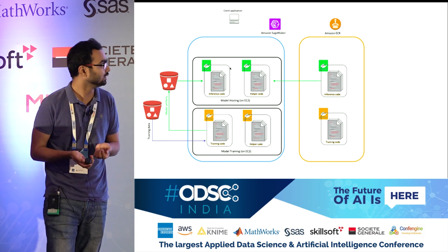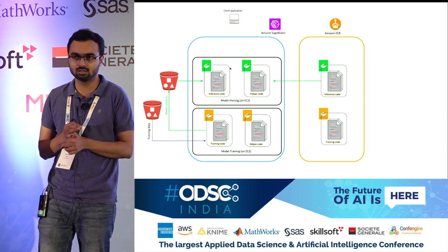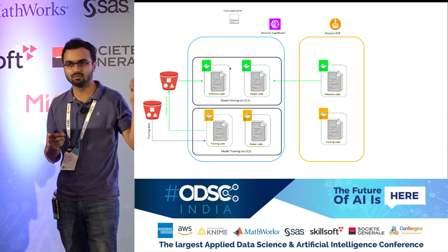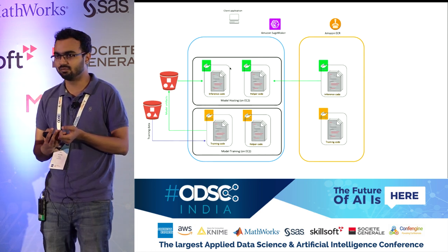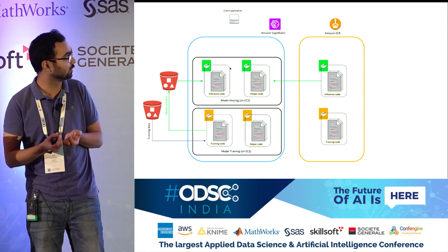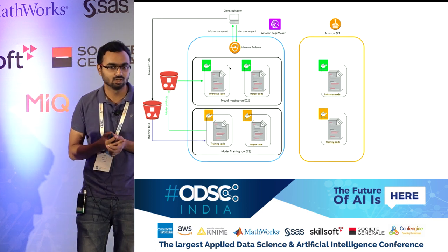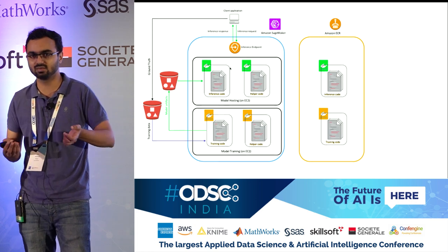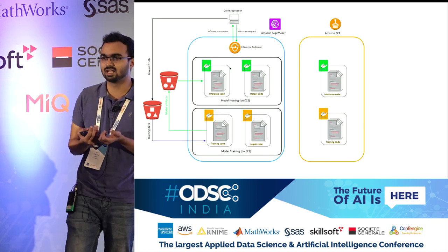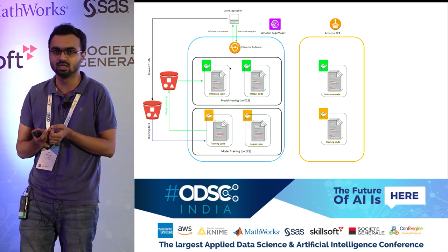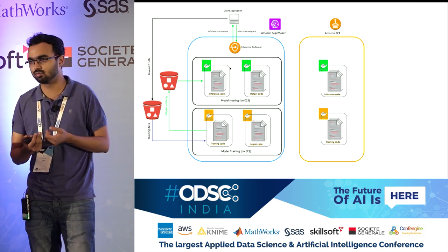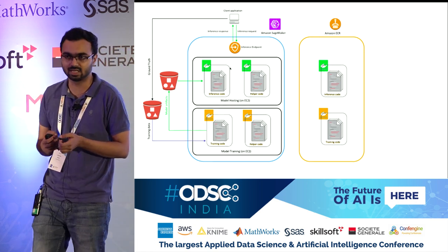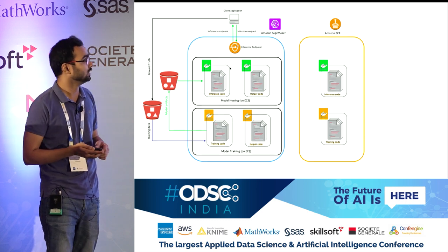The next step is inference. Within the SageMaker platform, you don't have to do this manually — we pull in the model artifacts from S3, wrap them with a serving API, and host it using something called an inference endpoint. This puts a load balancer in front of a bunch of deployed model artifacts so that the number of instances scales automatically depending on the number of inference requests coming in. All of this backend infrastructure is managed for you — that is the SageMaker platform.